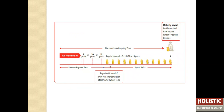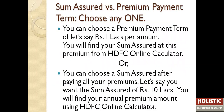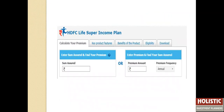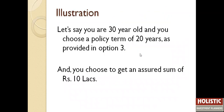You pay premium for 8, 10, or 12 years — this is your premium payment term. The payout period will be 8, 10, 12, or 15 years based on the option that you have chosen. For sum assured and premium payment, you have to choose one to make the calculation. Let's say you are 30 years old and you choose a policy term of 20 years as provided in Option 3 that we have discussed.